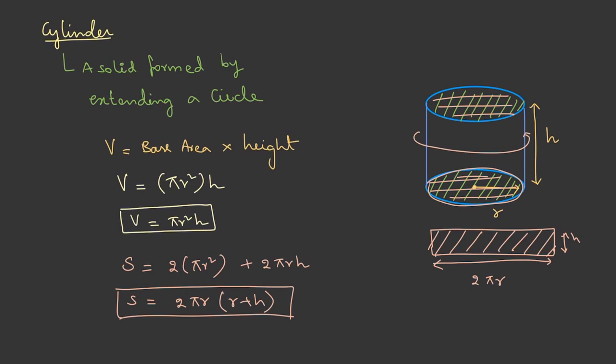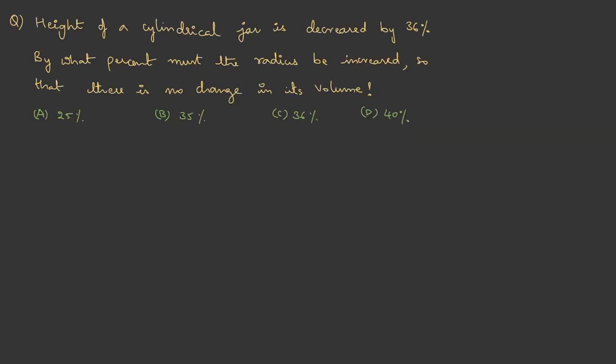Based on this, let us do a small question. Height of a cylindrical jar is decreased by 36 percent. By what percent must the radius be increased so that there is no change in its volume? There is a cylinder with a radius r1 and with height h and the volume is pi r1 square h.